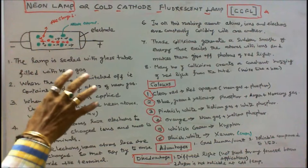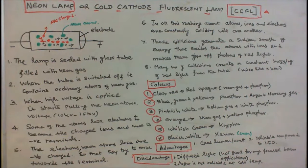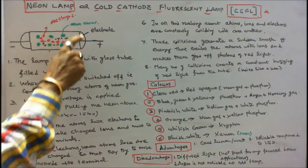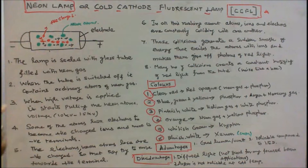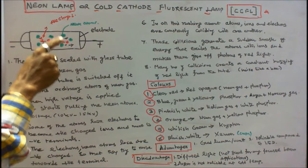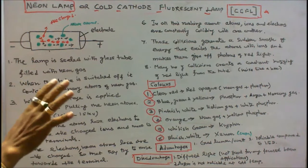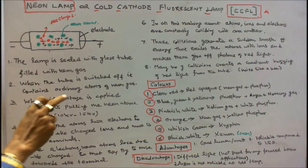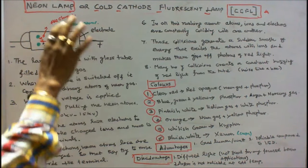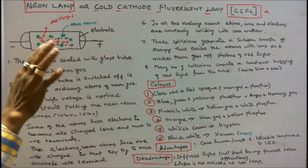Now we will see the principal operation of a neon lamp. The lamp is sealed with a glass tube and is filled with neon gas. When the tube is switched off under normal conditions, it contains ordinary atoms of neon gas — shown in green color — with neon atoms only present inside the tube.